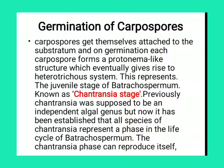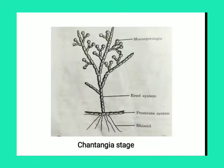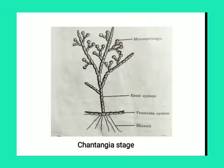The Chantransia phase can reproduce itself. This is the Chantransia stage, also known as the juvenile stage of Batrachospermum, and it germinates from carpospores.